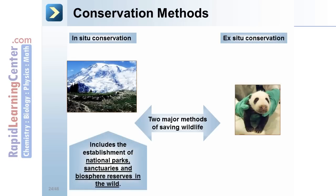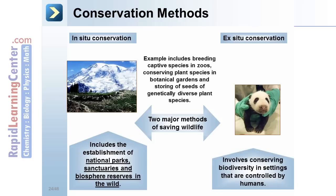In situ conservation includes the establishment of national parks, sanctuaries, and biosphere reserves in the wild. Ex situ conservation involves conserving biodiversity in settings controlled by humans, including breeding captive species in zoos, conserving plant species in botanical gardens, and storing seeds of genetically diverse plant species.